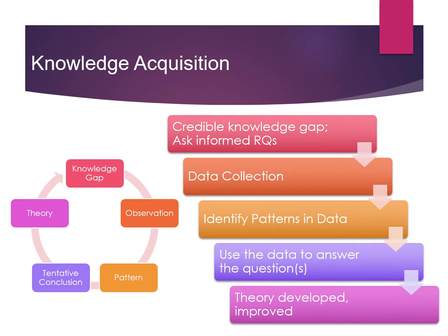Here's an idea about how this translates into a formal piece of research. We begin with asking what the knowledge gaps are in a particular field of study. In order to know what the knowledge gaps are, we have to do desk research to identify what other researchers and practitioners have found. This lets us ask informed research questions. Then we gather data and work to identify patterns in the data to help us uncover new knowledge, and over time we're able to spot the patterns and build a theory.